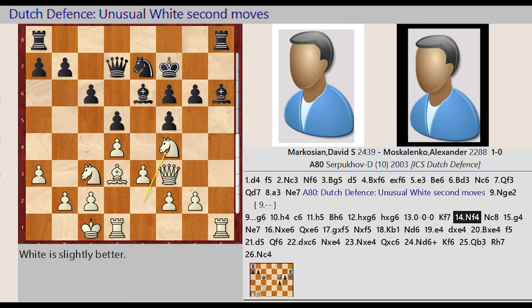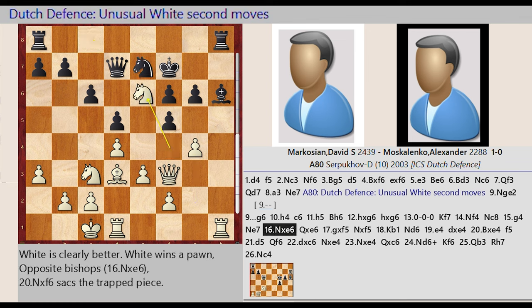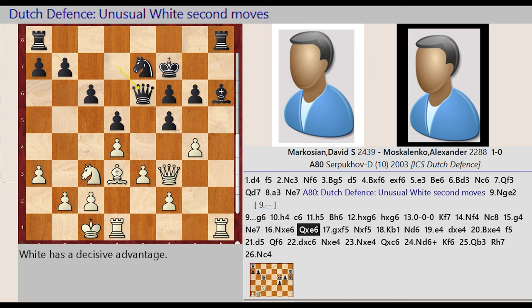knight c8, g2 g4, knight c8 e7, knight f4 captures e6, queen d7 takes on e6, g4 takes on f5, knight e7 captures f5, king c1 b1, knight f5 d6.